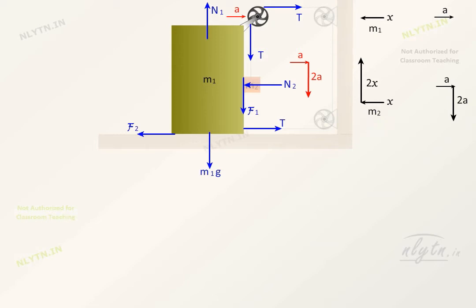So, writing equations, we get N1 is equal to m1g plus T plus F1 and 2T minus N2 plus F2 is equal to m1 into a.